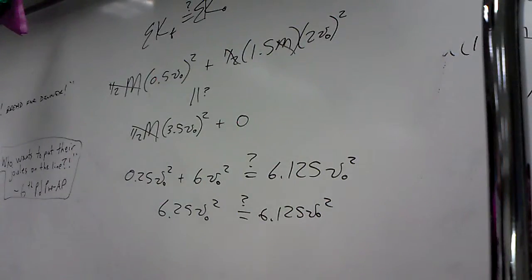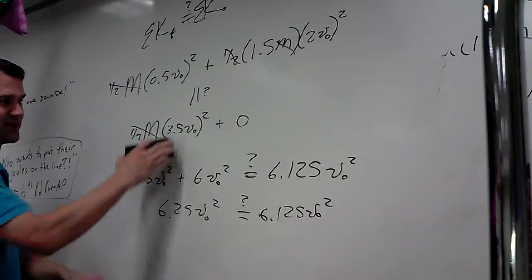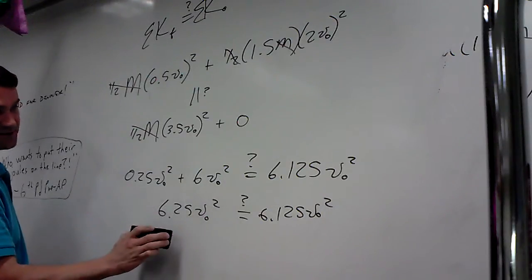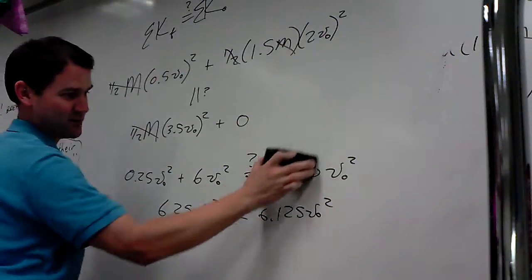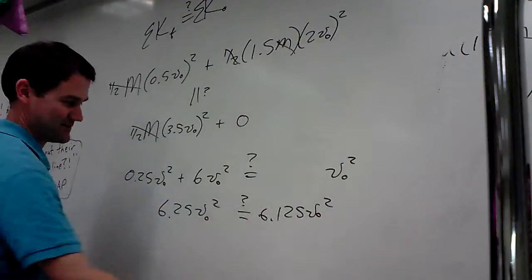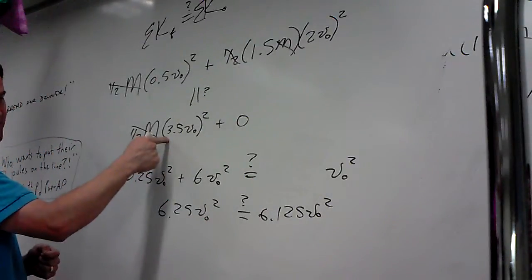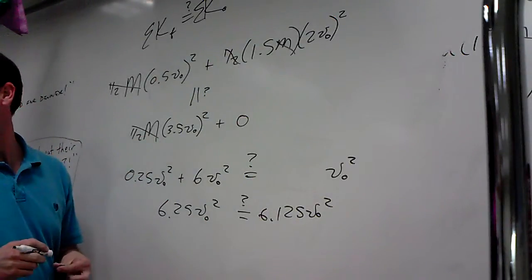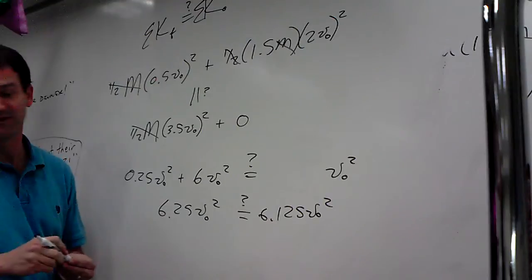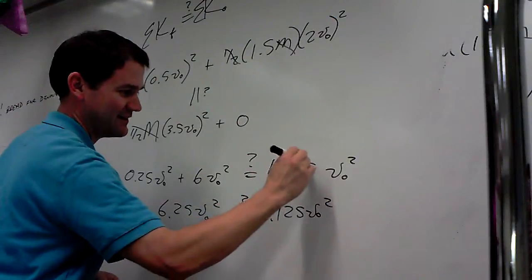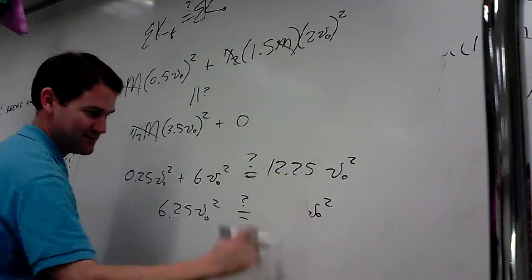Okay, amendment to the previous question. I should have known that 3.5 squared was not 6.25. No, not that one — 6.125. Clearly 3.5 squared is not 6.125. It's 12.25. But that's still not equal.